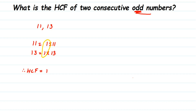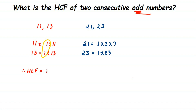Now let's take bigger numbers: 21 and 23. So 21 = 1 × 3 × 7 and 23 = 1 × 23 (since 23 is a prime number). Here we have only one common factor, which is 1. Apart from 1, there is no other common factor, so the HCF of 21 and 23 is again 1.